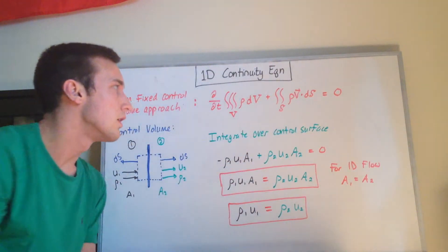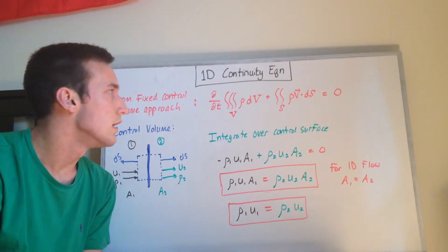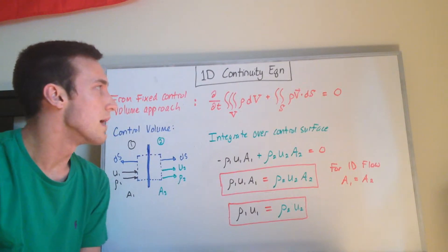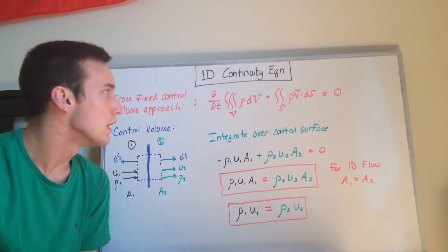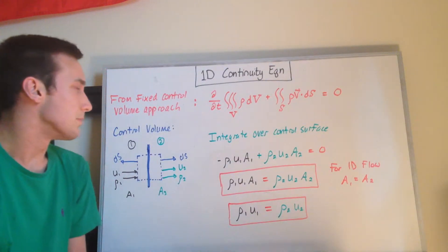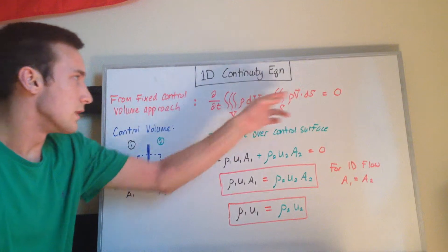And then the second integral term is the mass flow out of the control volume through the surface S. And when you add these two together, it equals zero.